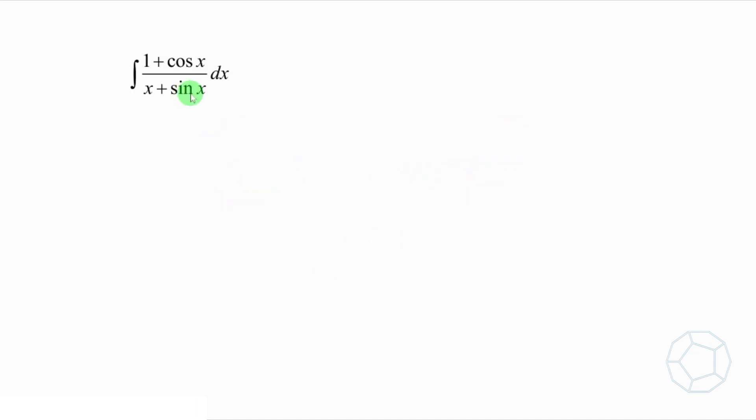Let's look at the first one. A standard trick is to use substitution. Let u be the denominator x plus sin x. Therefore, du is equal to bracket 1 plus cos x dx. We are so lucky that this right-hand side is already in the integral. We can put everything inside.